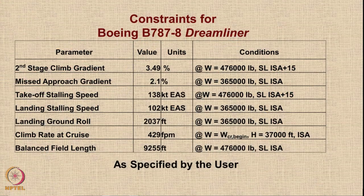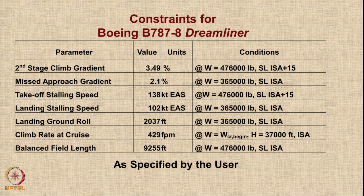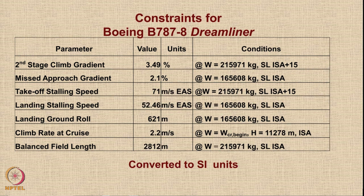Let us look at the list of constraints for the Boeing 787 Dreamliner. There are 7 constraints in all as specified by the user. The values specified are in the British system of units — this is the reality in aviation, as most aviation experts still work in the FPS system. However, since we are supposed to work in the SI system, the values in this table have been converted into SI units. The numbers are not rounded but are all in SI units.